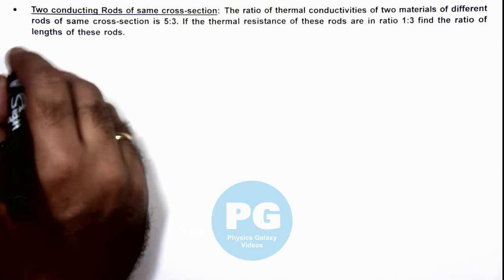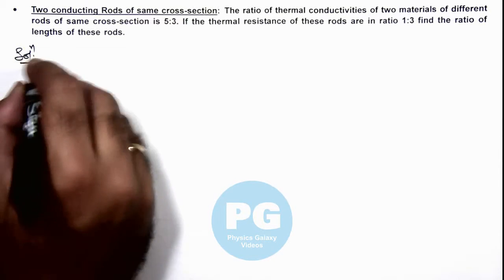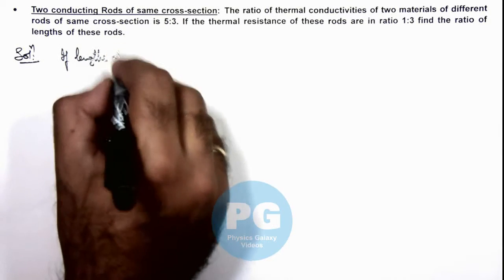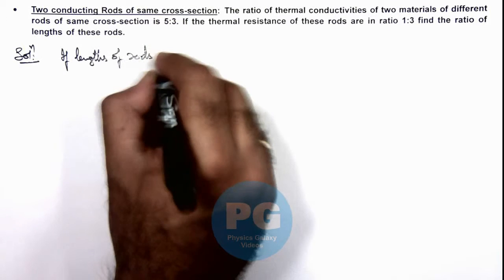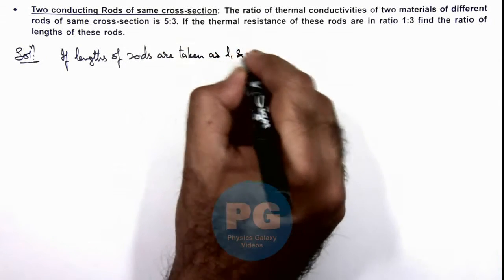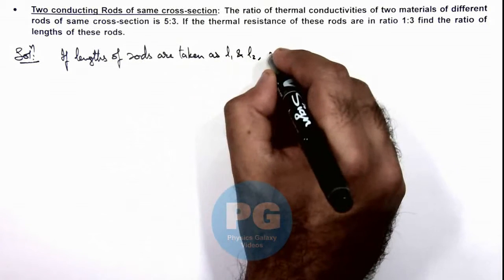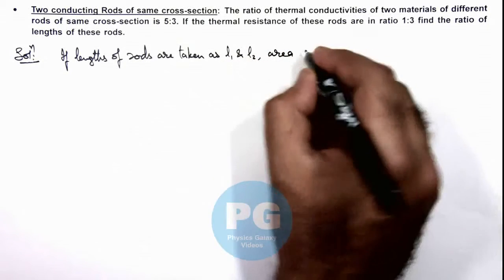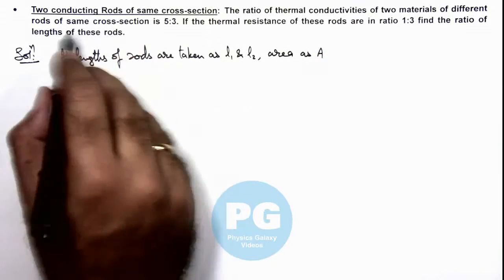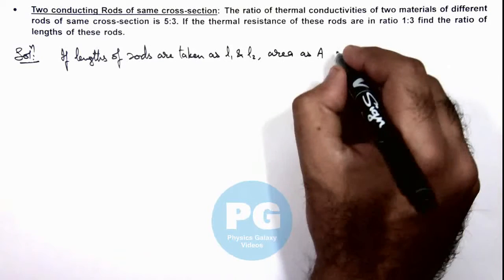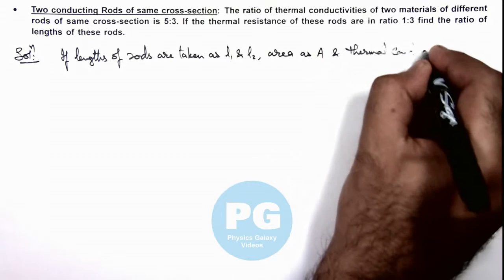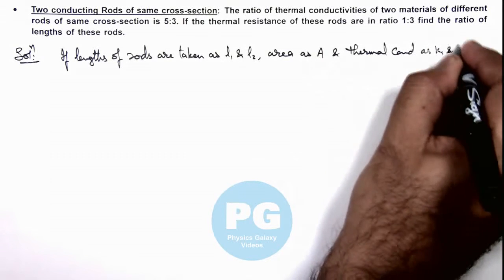In this solution, we can directly write: if lengths of rods are taken as l₁ and l₂, area as A (because we are given that the rods are having same cross-sections), and thermal conductivities as k₁ and k₂.